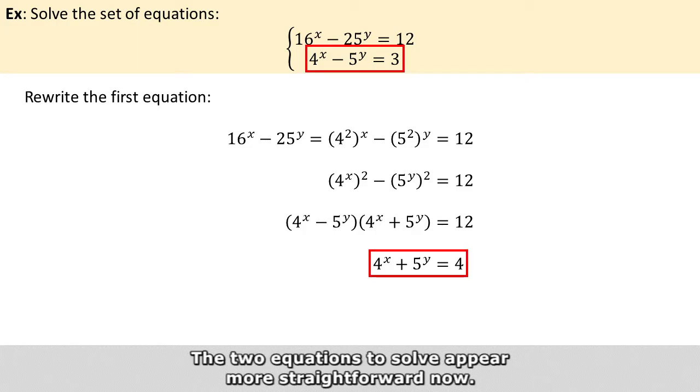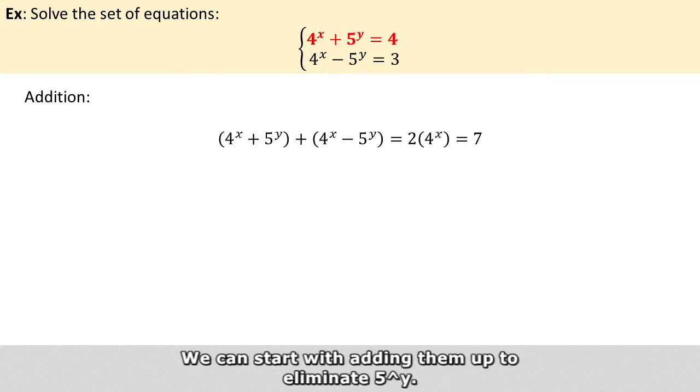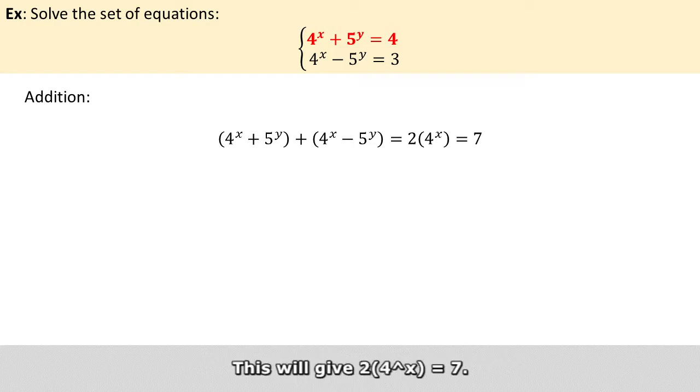So the two equations to solve appear more straightforward now. We can start with adding them up to eliminate 5 to the power of y. This will give 2 times 4 raised to the power of x equals 7.